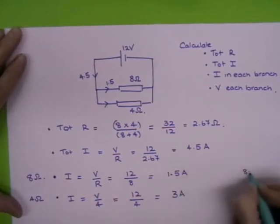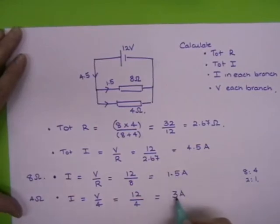And you can see the ratio is right. The ratio should have been 8 to 4, which is 2 to 1. But it's the other way around because the 8 ohm resistor actually gets less. So that's a ratio of 1.5 to 3. So that's correct.